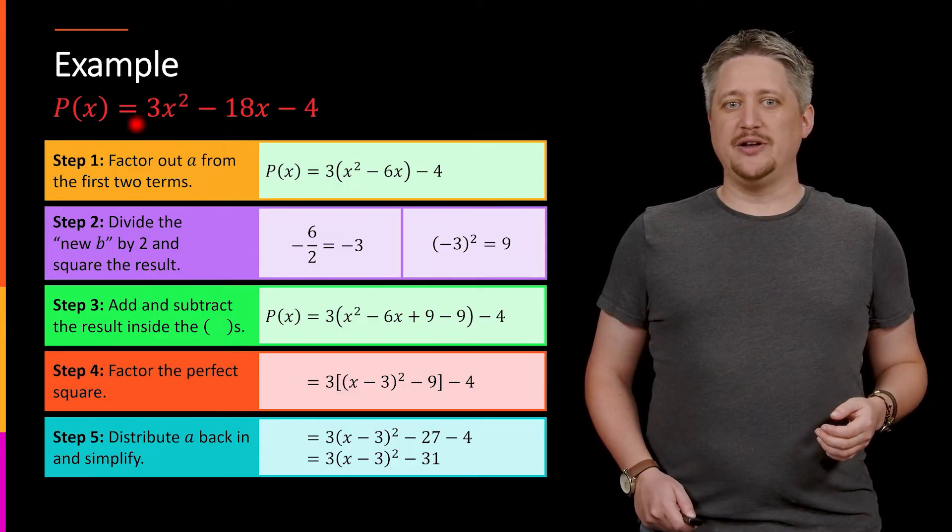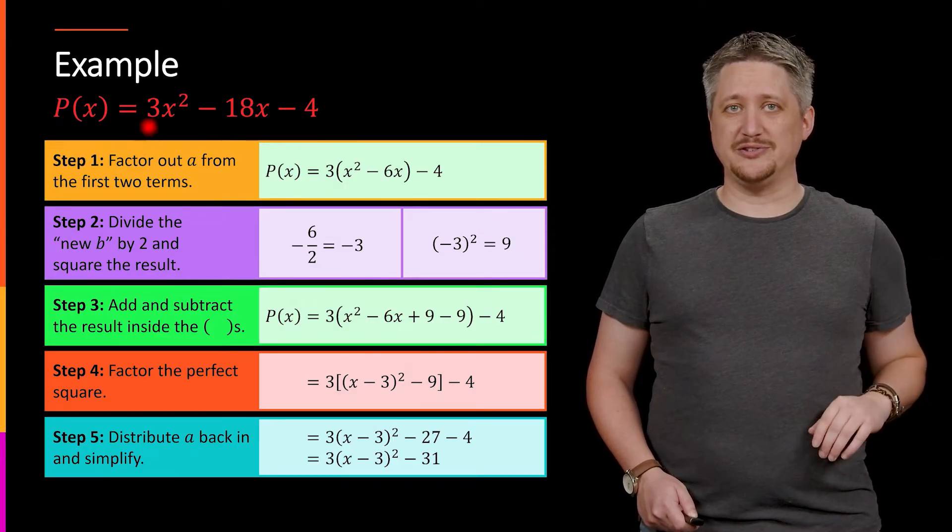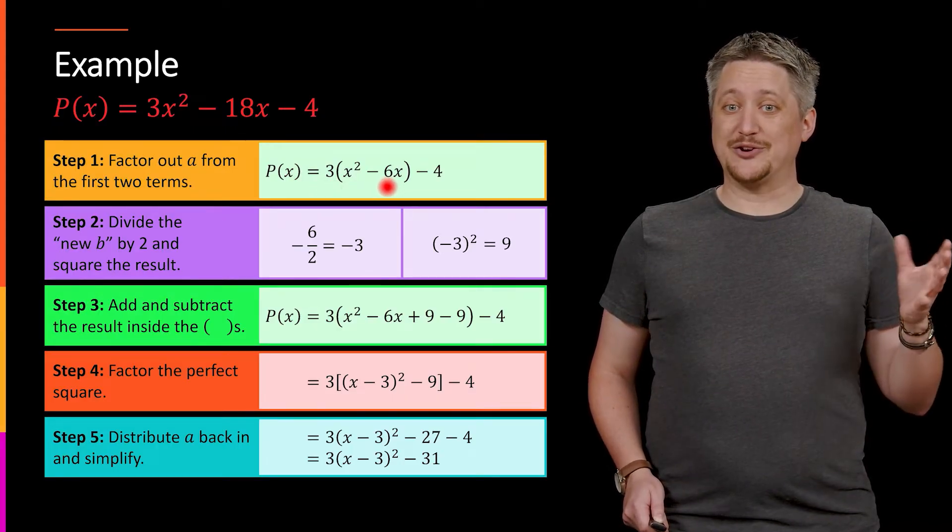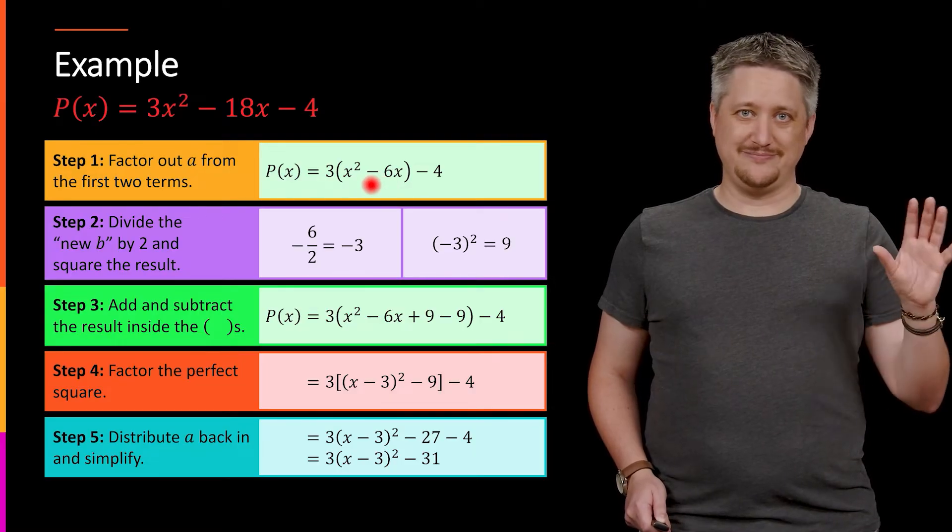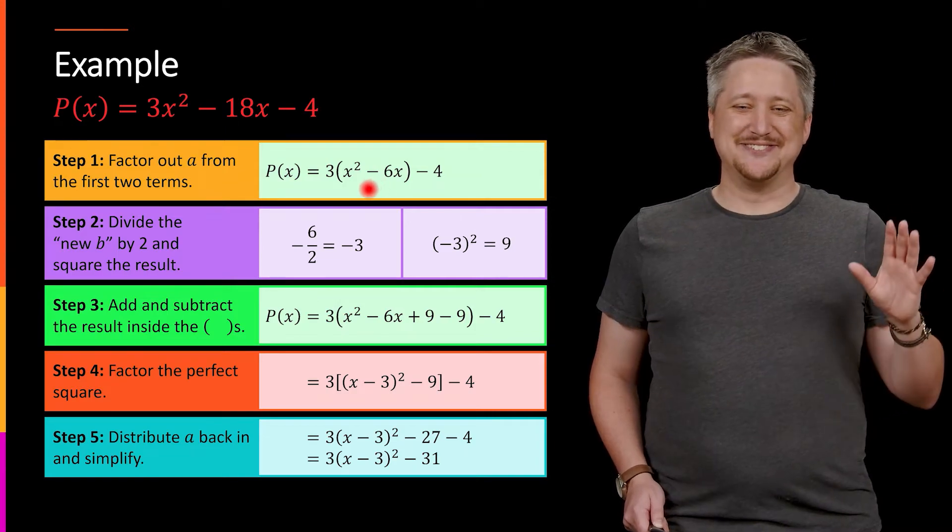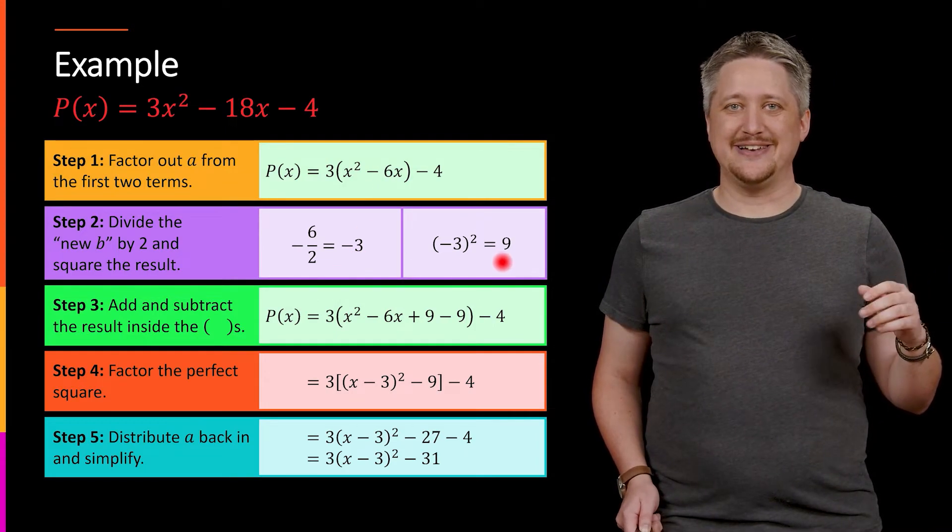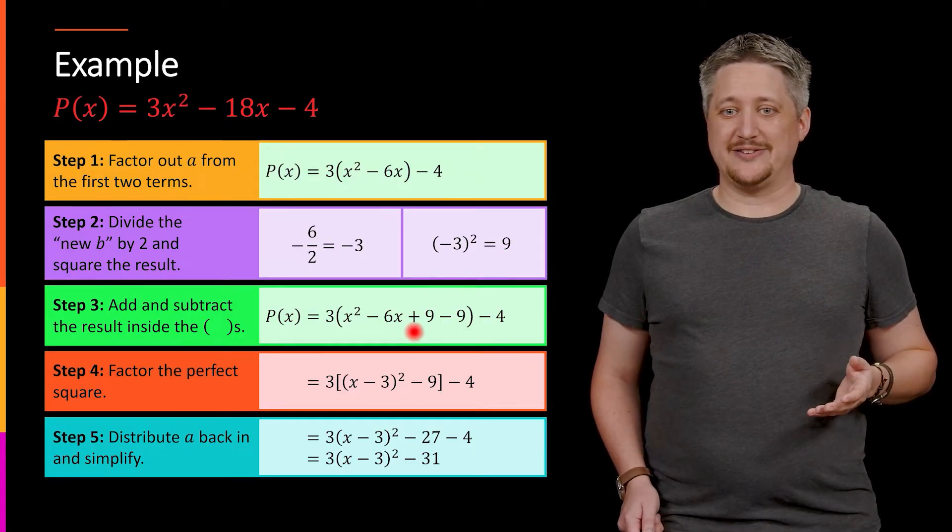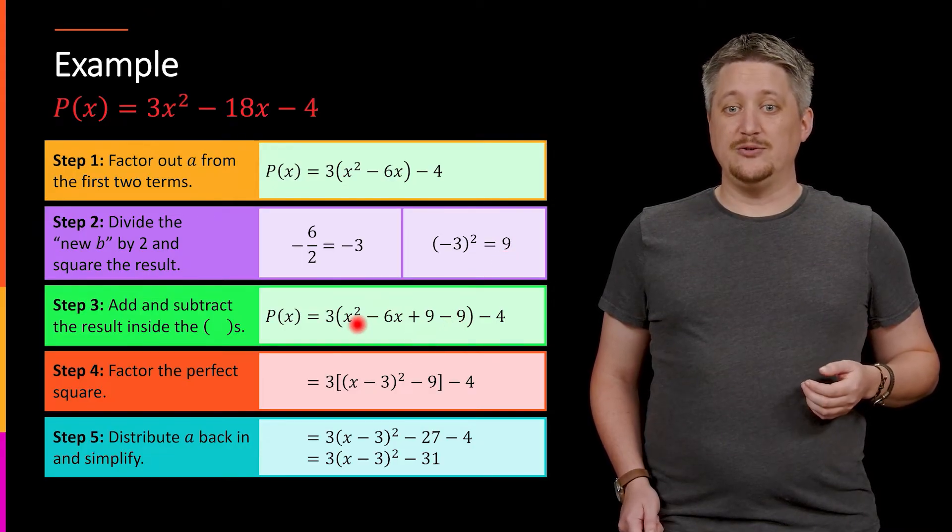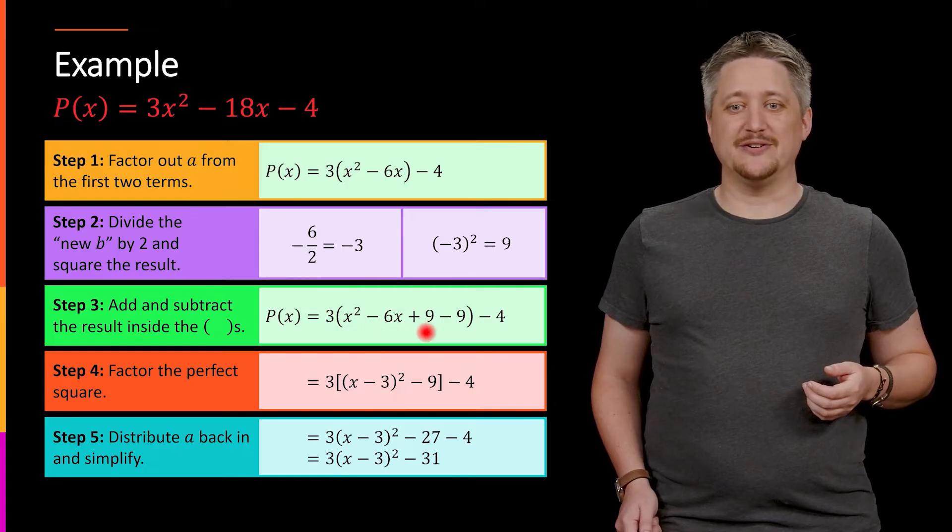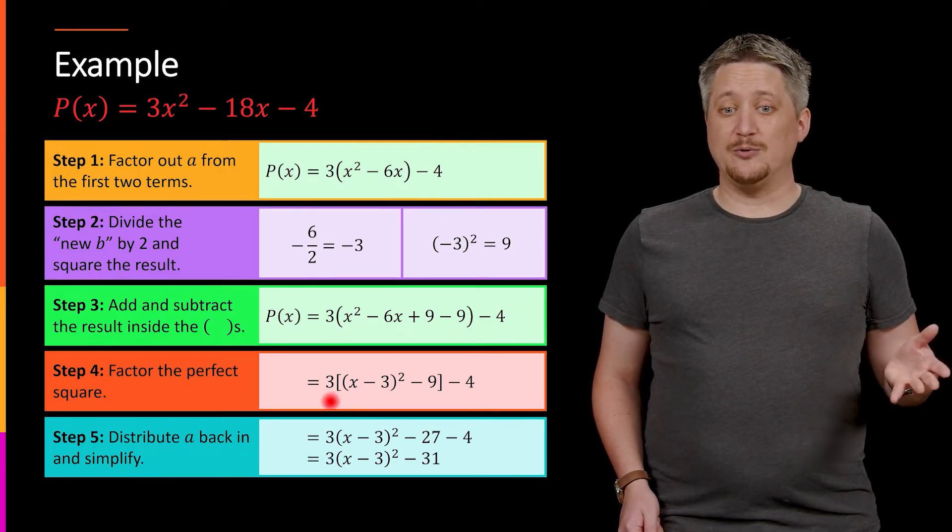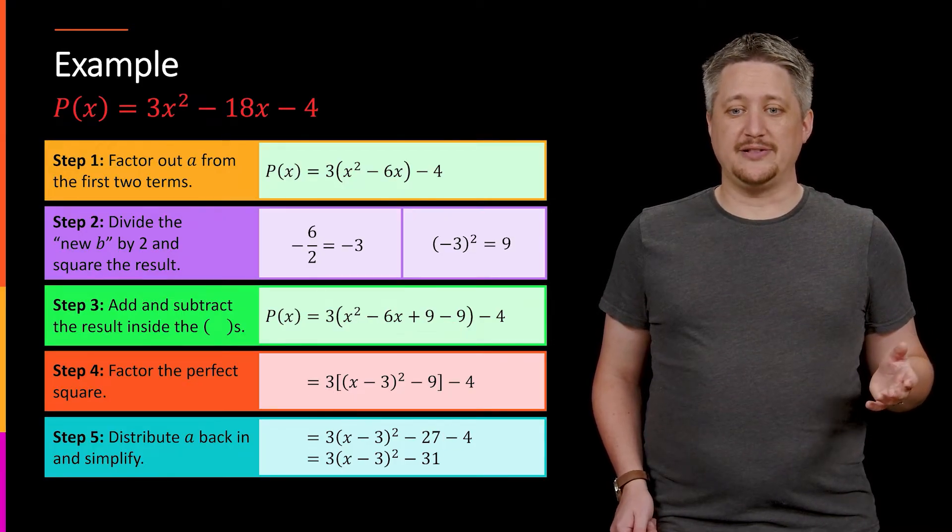This is the step-by-step mechanical process of completing the square. Step 1, pull out any a term because it just makes life difficult if it's sitting there. I'm going to pull it out and ignore it for a little while. Then I'm going to take whatever the b term is, the term in front of that x, like the regular x, not the x². Hopefully I factored out the thing in front of x². So I'm going to take that, cut it in half, and then square it, and then add and subtract that. So I have in this case, cut it in half, I got -3 squared, it's positive 9, add and subtract 9. Now, this first three terms that are here, those make a perfect square, the other term just sits around, doesn't do anything for now, distribute back out whatever the a term was, and then clean up.